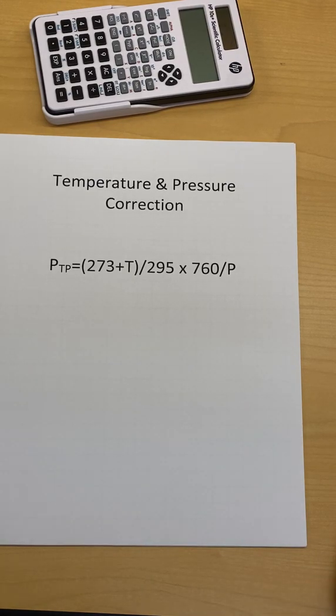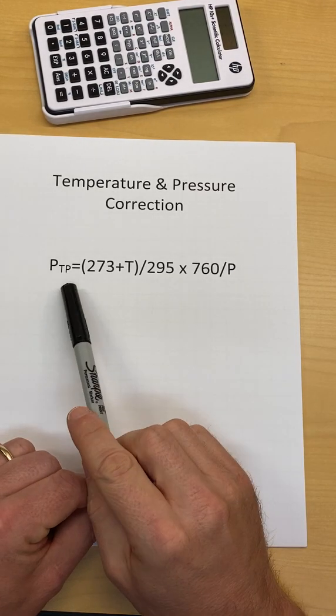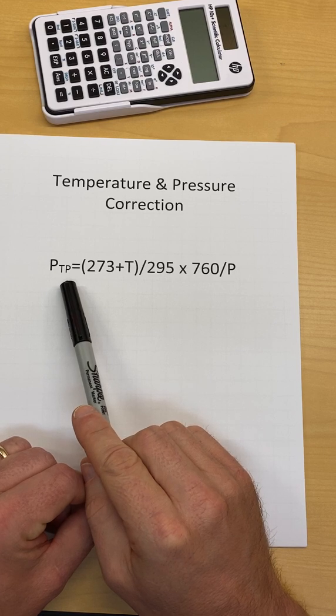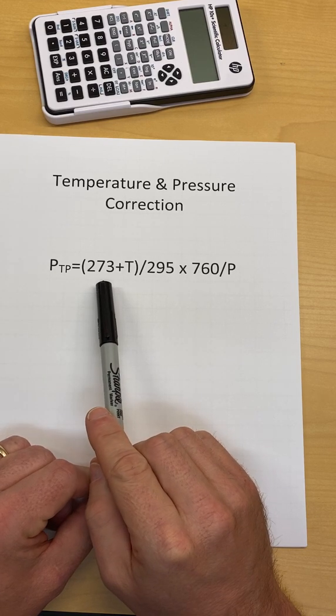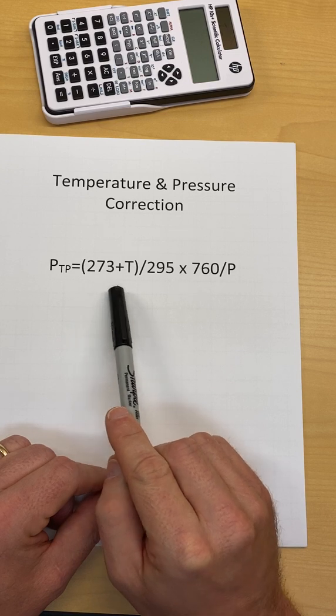I'm going to run through an example of temperature and pressure correction. Here's the basic formula right here. Temperature and pressure correction is equal to 273, this is in units of Kelvin.